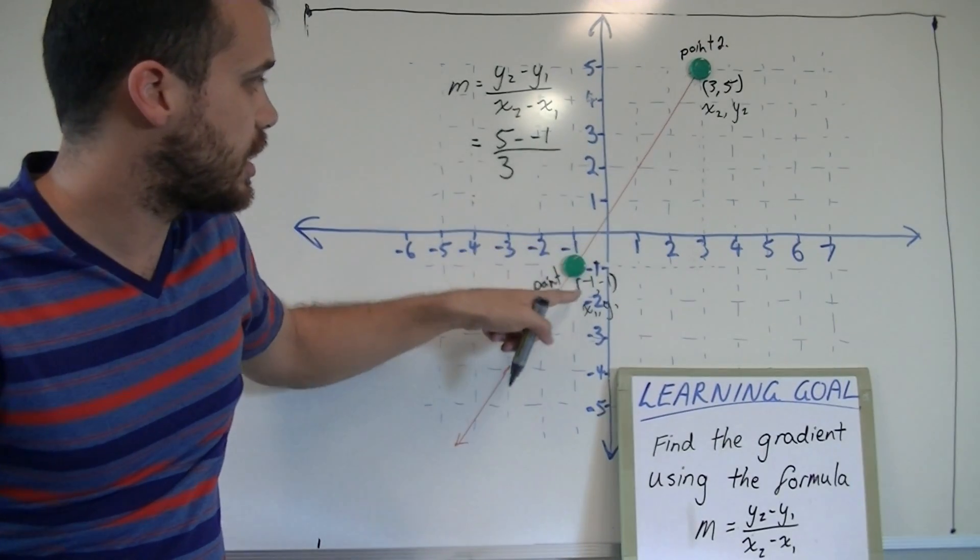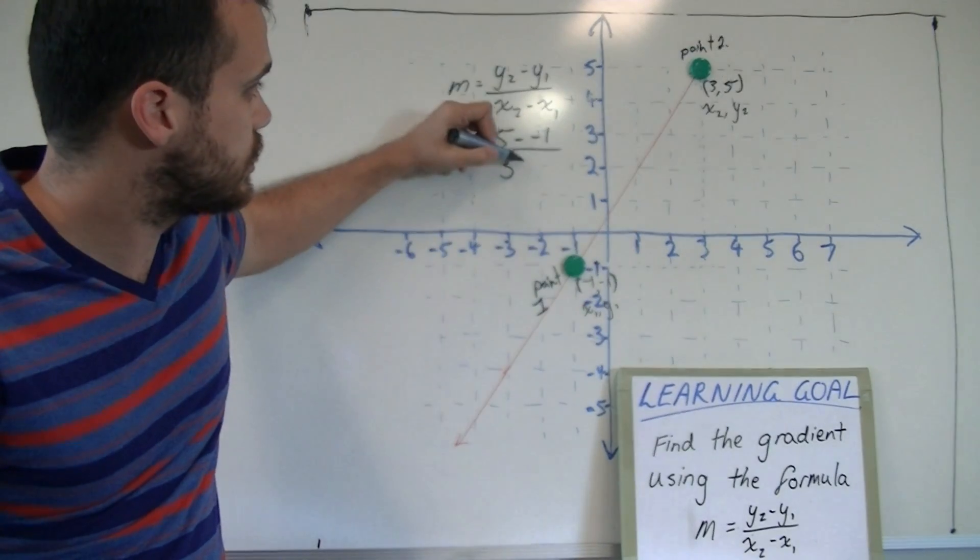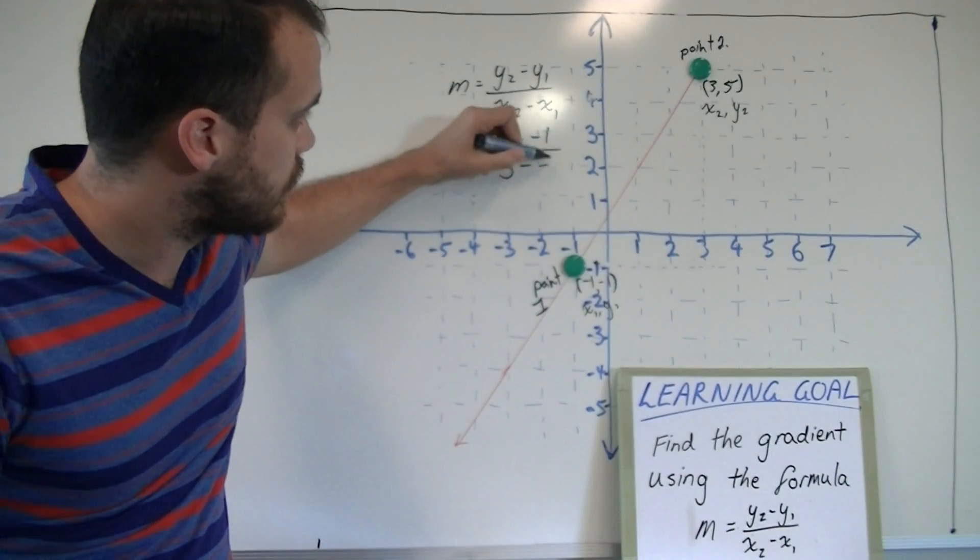You can see that x1 is negative 1. So it's going to be 3 minus negative 1.